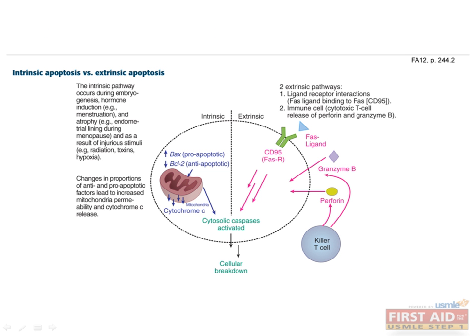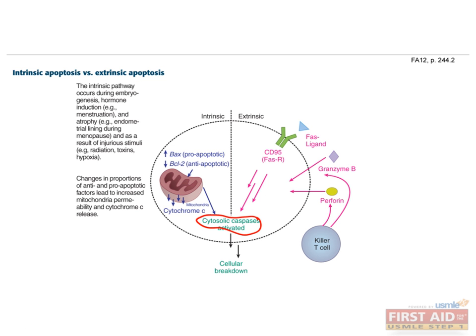The two pathways to get apoptosis started are the intrinsic and extrinsic pathways. Both pathways end in the activation of cytosolic caspases — the killer enzymes that degrade the entire cell. The intrinsic pathway gets activated when the normal balance of pro-apoptotic and anti-apoptotic proteins is shifted. The two proteins listed here are common and important to know, especially BCL2, because it plays a role in certain cancers. Once the balance has shifted, the mitochondria leak cytochrome C, which activates the killer caspases. Some examples of the intrinsic pathway in normal life include embryogenesis — when structures like Müllerian ducts in males degenerate — as well as menstruation and atrophy.